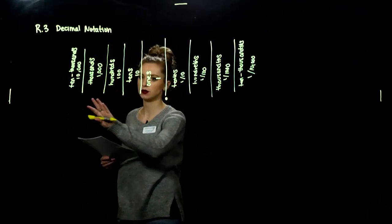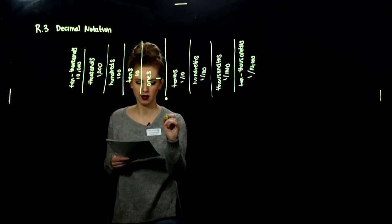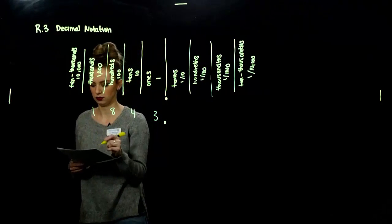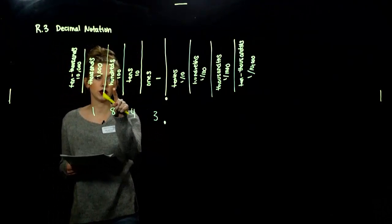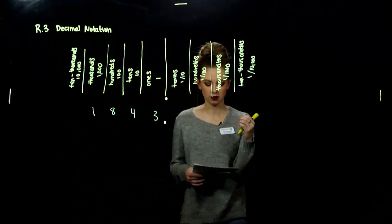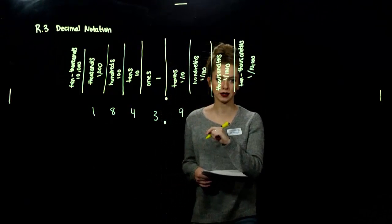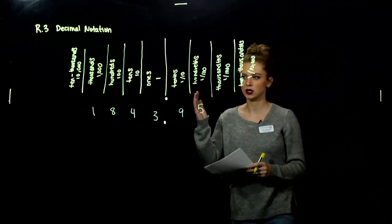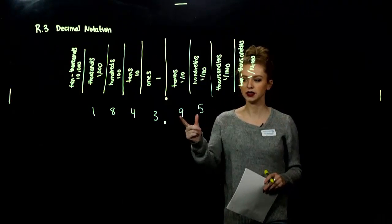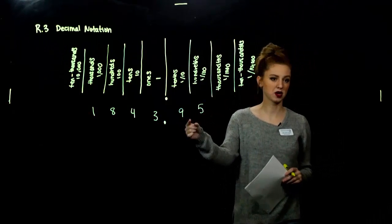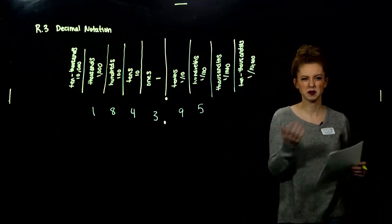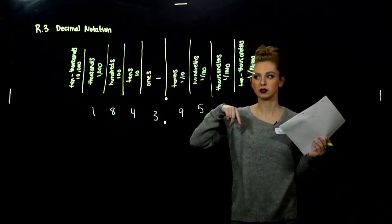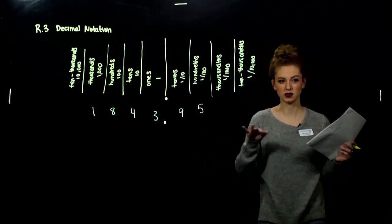Let's put a number into these different place values according to where the decimal is. To the left of the decimal I have: three, four, eight, one — so I'm looking at one thousand eight hundred and forty-three. And to the right, I've got nine tenths and five one-hundredths. We need to be able to identify which place we're looking at, because a decimal might go on for a long time and we may need to round. When I tell you to round, I'll specify to which place — round to the nearest thousandth, round to the nearest hundredth — so we have to determine which place we're talking about.